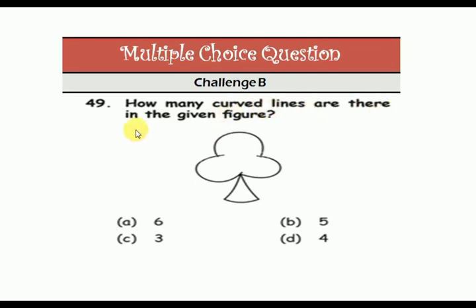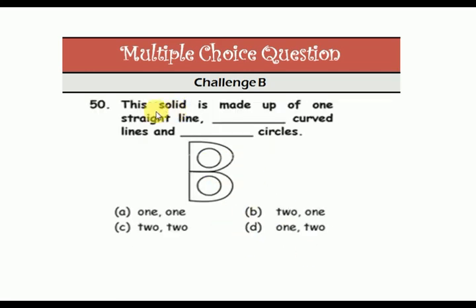How many curve lines are there in the given figure? One, two, three, four, five, and six — six curve lines. This is a solid made up of straight lines: this is one straight line, and this is also two.